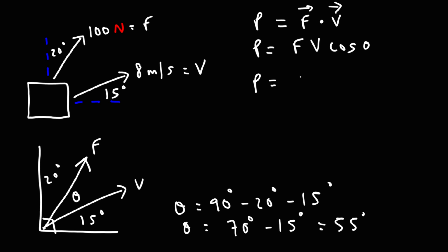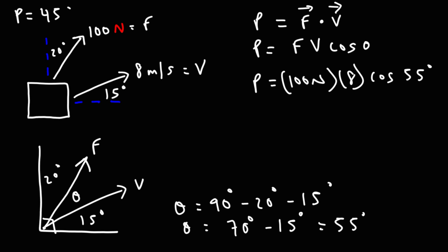To calculate the instantaneous power, it's going to be 100 newtons times a velocity of 8 meters per second times cosine of 55 degrees. So the instantaneous power is 458.86 watts, which rounds to 459 watts or joules per second. For this situation, the force is transferring approximately 459 joules to the block every second.